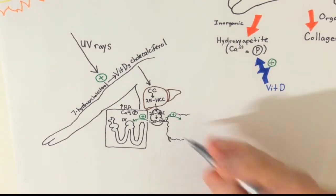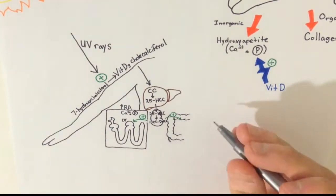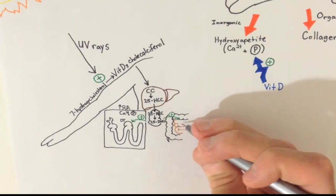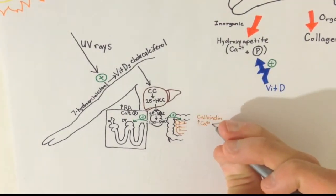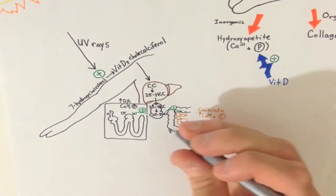Next, possibly the number one job of this active vitamin D is the stimulation of the synthesis of calbindin in the GI tract. This protein increases calcium and phosphate absorption as well.